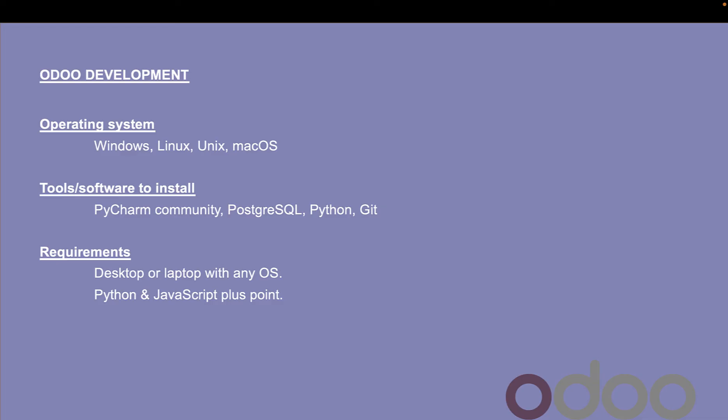Since Odoo is based on Python and JavaScript, and Python is a multi-platform language, you can develop Odoo whether you are a Windows user, Linux, Unix, or even Mac OS user. In the next video we will discuss the tools to install, but briefly: PyCharm Community edition and PostgreSQL — the database used by Odoo.